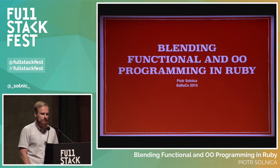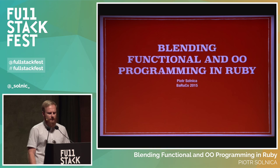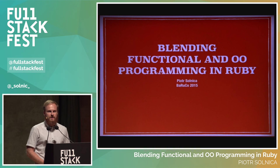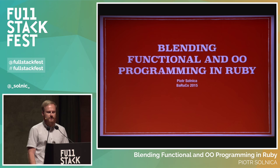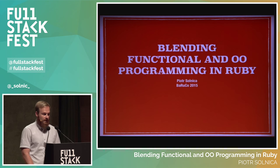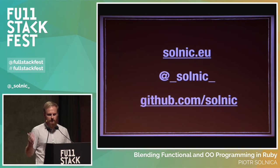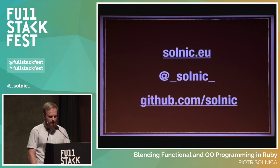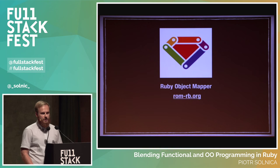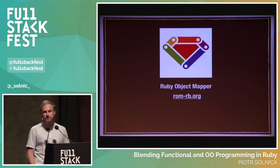This talk is about blending functional and object-oriented programming in Ruby. It's probably not a typical Ruby talk — it's not one of those talks where I got bored on a weekend and decided to do crazy stuff. This is based on a few years of experience, experimenting with different styles of Ruby. I've been working on a project called Ruby Object Mapper, and the things I'm going to show you were born while working on that project.